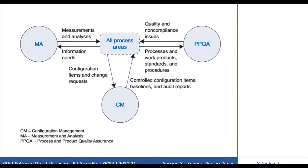The first is the Measurement and Analysis (MA) process area. This supports all process areas by providing specific practices that guide projects and organizations in aligning measurement needs and objectives with the measurement approach that is used to support management information or management needs.